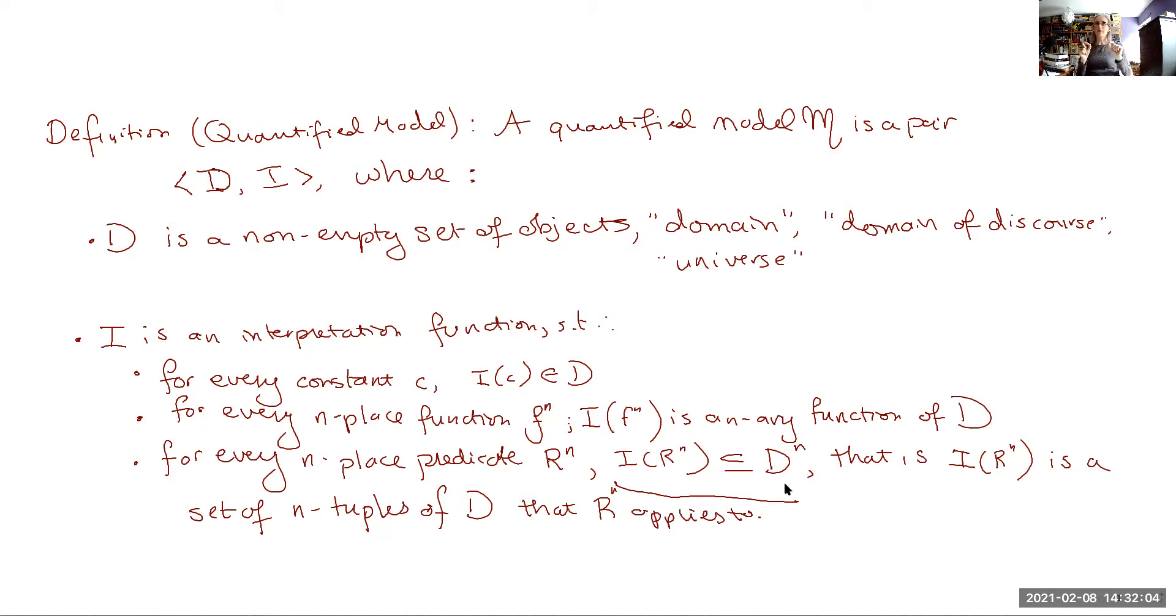Now, there isn't a word for, like, a one-tuple, but that is just individual objects. So if you have a predicate, the interpretation of the predicate is the set of objects that that predicate applies to. If you have a binary relation, the interpretation of that binary relation is the set of pairs that that relation applies to. If you have a ternary relation, it is the set of triples. If you have a quaternary relation, it is the set of quadruples, and so on and so forth. Once we give examples of this, it will become much clearer.